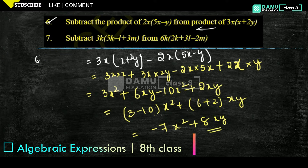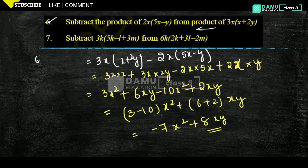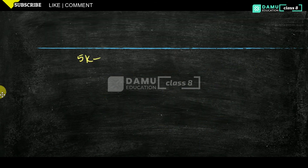Next one: subtract 3k into 5k minus l plus 3m, from 5k minus l plus 3m, minus l plus 3m into 3k.